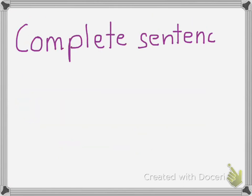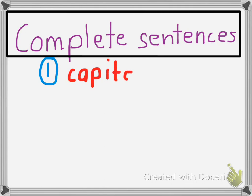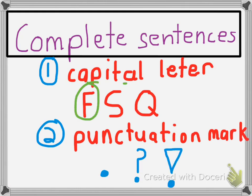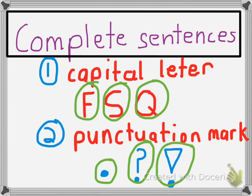Also remember there's a few other things that a complete sentence needs to be or have. Number one, it needs to have a capital letter like this F, this capital S, or this capital Q. It also needs to have a punctuation mark at the end like a period, a question mark, and an exclamation point.